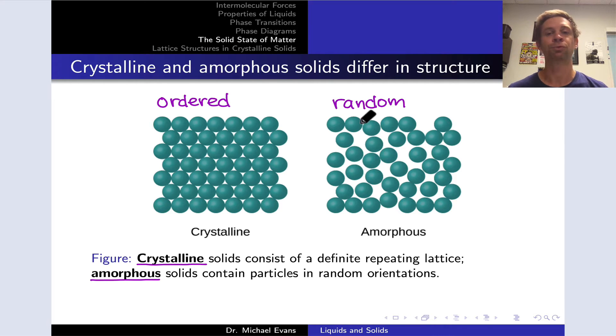Many solids, however, have a random arrangement of the atoms or molecules. These are called amorphous, and they contain their particles in random orientations and somewhat random positions with respect to one another.